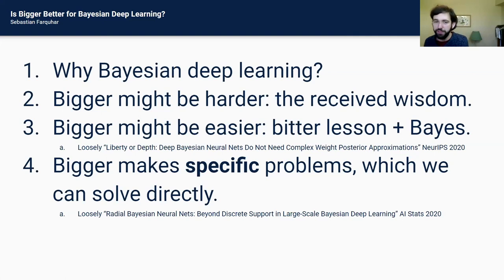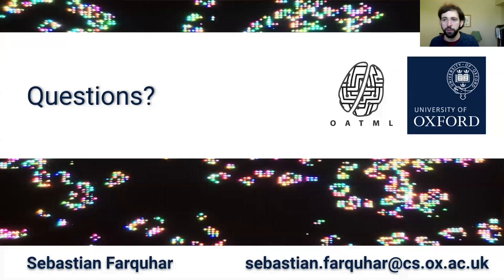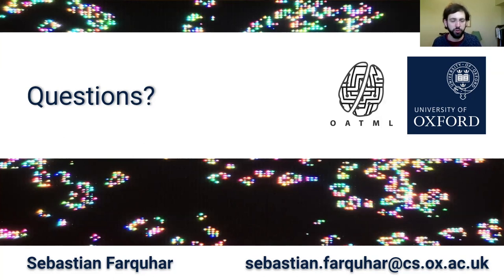I'm quite optimistic about getting Bayesian deep learning working in potentially very large models. There's a lot of work going on in this area, and I think we shouldn't hold ourselves back by focusing too much on modeling the full approximate posterior distribution between parameters — because that can be intellectually satisfying but might make very little difference to the quality of the approximate predictive posterior distribution.